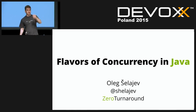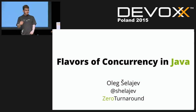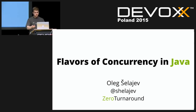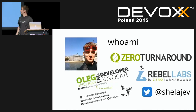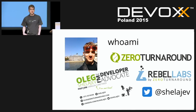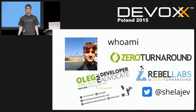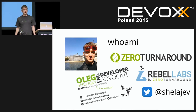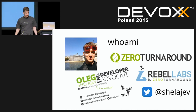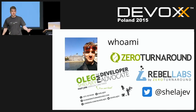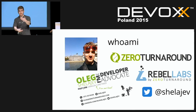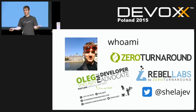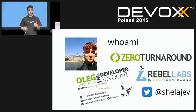In general, we'll talk through different flavors or models of how to organize concurrency and parallel computations on the Java platform. A word about me: I am a developer advocate at ZeroTurnaround, where we produce developer tools for Java developers. One of my main responsibilities is to curate and maintain our content blog called RebelLabs. You can reach me on Twitter, and you can also ask questions via the DevExponent app or on Twitter.